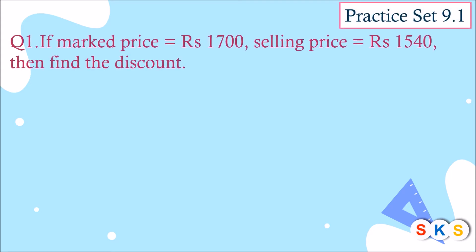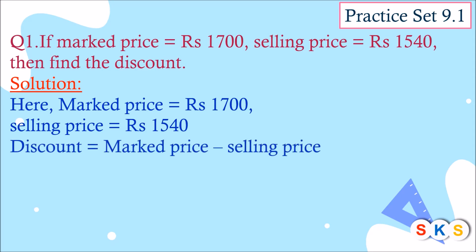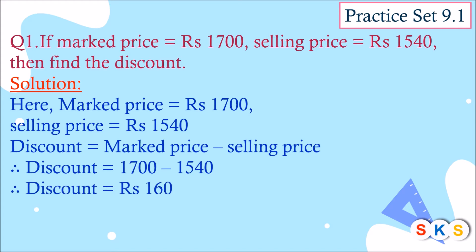Question 1: If the mark price is rupees 1700 and the selling price is rupees 1540, find the discount. The mark price of the article is 1700 but the shopkeeper is selling it for rupees 1540, which is less than the mark price — it means the shopkeeper is offering a discount. To find the discount, we subtract the selling price from the mark price: discount equals 1700 minus 1540, so discount equals rupees 160.